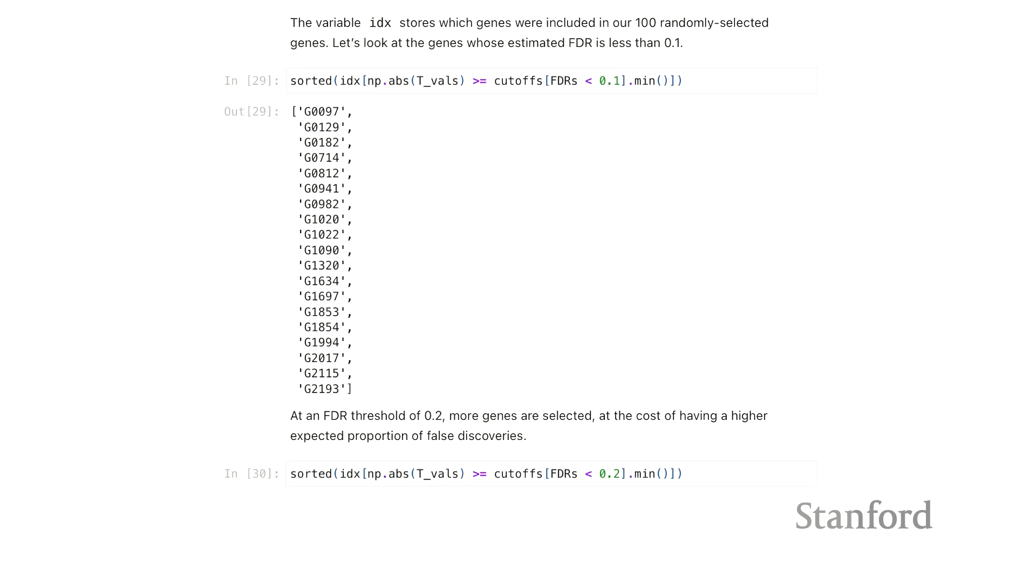So you can see the final outcome is for a given threshold of FDR, we again get a list of significantly selected genes.